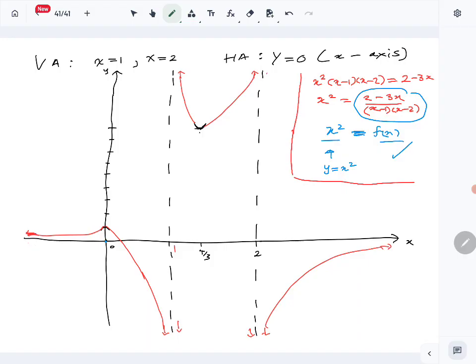We know y equals x² is a parabola. When x equals 1, y equals 1. When x equals 2, y equals 4. So x² looks like that, and the other side is also similar. We have a parabola shape like this—not exact, but you get the idea.